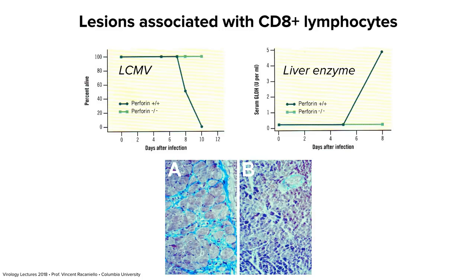Here's an example of CD4-mediated lesions: herpes stromal keratitis. This is one of the most common causes of blindness in developed countries and is pretty much all immunopathological, caused by CD4-positive Th1 cells. Multiple herpes infections make the cornea more and more opaque until it's completely opaque and you can't see. The virus replicates in the corneal epithelial cells, but the damage occurs in the underlying stromal cells — damaged by cytokines from CD4-positive Th1 cells. The epithelial layer becomes thinner from infection, while CD4 cells in both the epithelium and stroma secrete cytokines that damage the stroma, causing opacity and blindness.